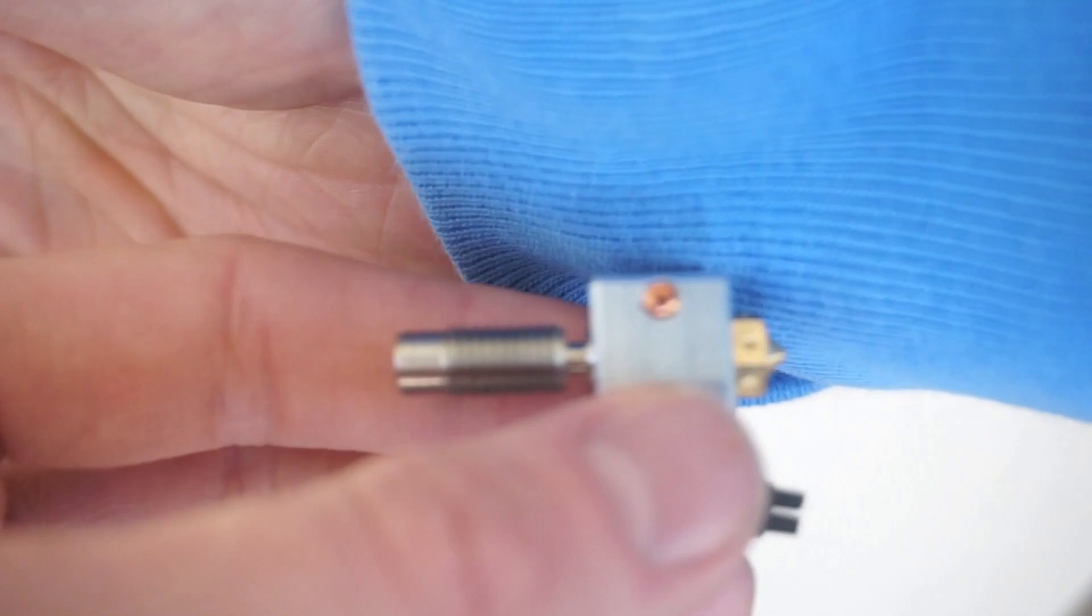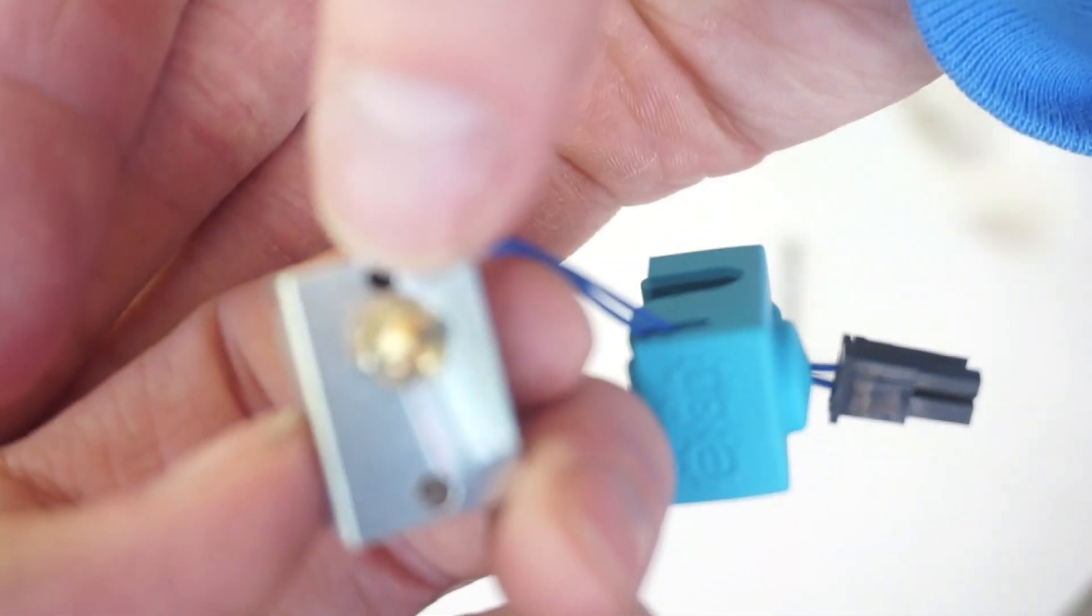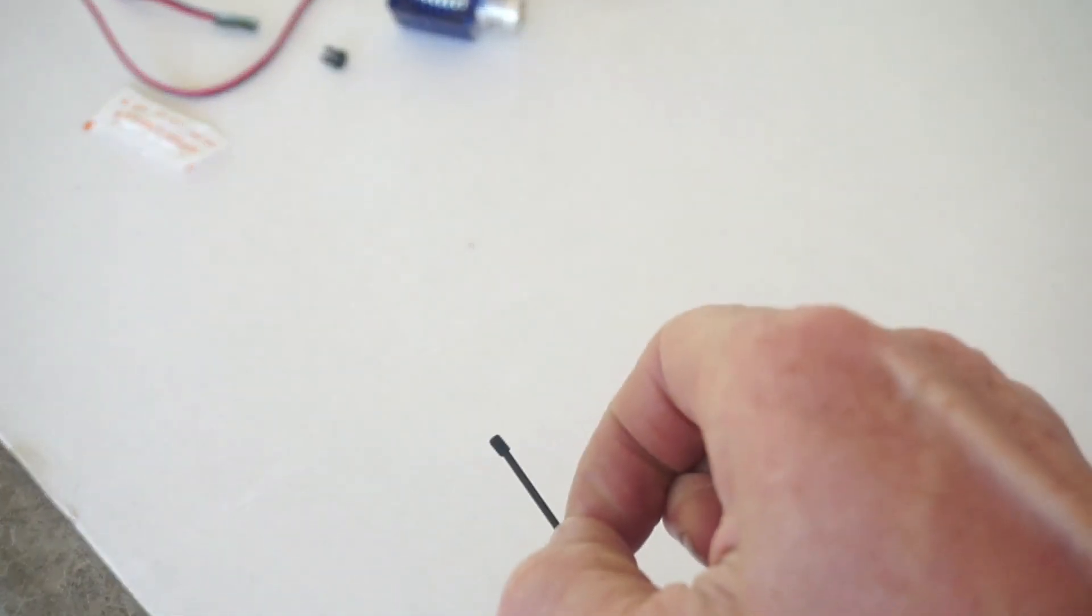This is what it's going to look like with the sensor piece. Attach the screw on here, right here. This is what the screw looks like. It's really small.